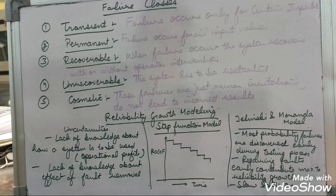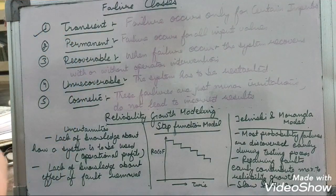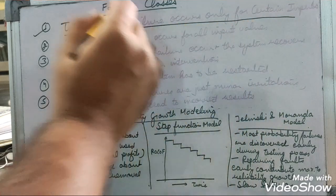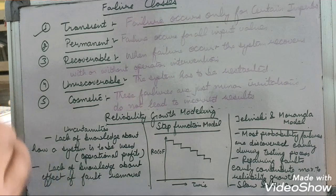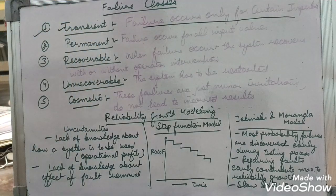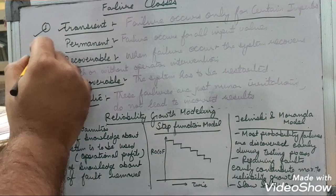The first class is the transient class. With transient errors, failures occur only for certain inputs. Transient errors are those types of errors which only occur for certain input values. The second type is permanent errors.